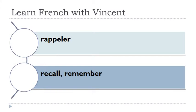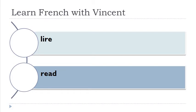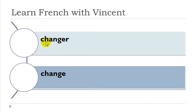Rappeler. Remember, this 'e' here is not really pronounced. Rappeler. Lire. Changer. When you combine 'c' and 'h', you get the sound 'sh', and after that you've got your nasal 'en' — 'ch' and then 'j'. Changer.